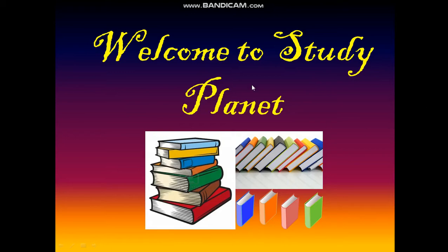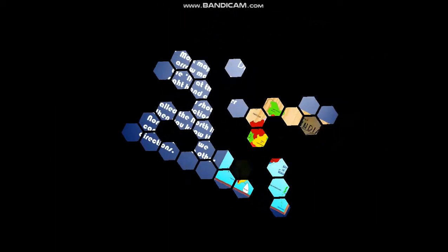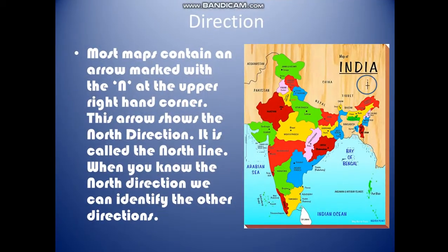Good morning everyone. Welcome back to my channel Study Planet. Today we are going to continue with the chapter maps and today we will cover part 2. We did components of the maps which were direction, distance and symbols. Today we will complete the 3 components of the maps and then we will study about the sketch and the plan. So let's start with direction first.